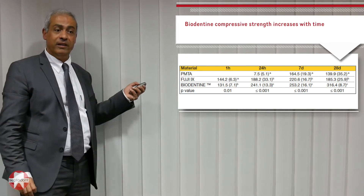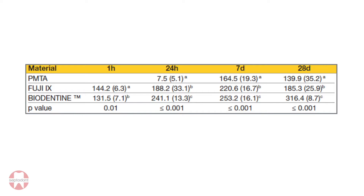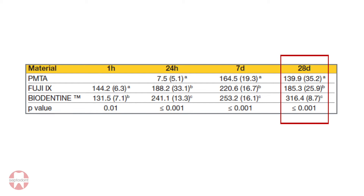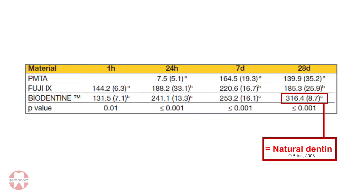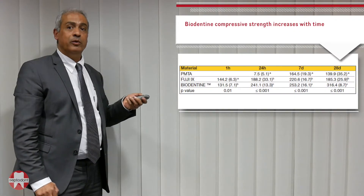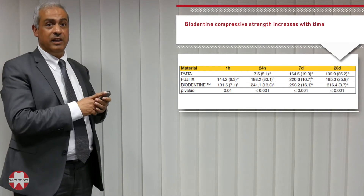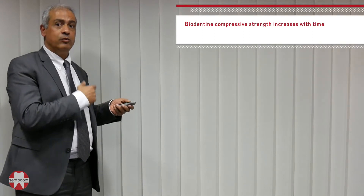What we see here is the compressive strength of Biodentine compared to ProRoot MTA and to Fugenine. Simply one hour after setting, the compressive strength is comparable to that of Fugenine and much higher than that of ProRoot MTA. After 24 hours, it even exceeds that of Fugenine. Most importantly, after 28 days, the compressive strength of Biodentine is equivalent to that of natural dentin. This is very important clinically because it means you can cut, shape, and reshape Biodentine in the same way as dentin. This means you can apply Biodentine as a bulk restorative material even to replace enamel, and afterwards reshape it and cover it with a composite resin material.